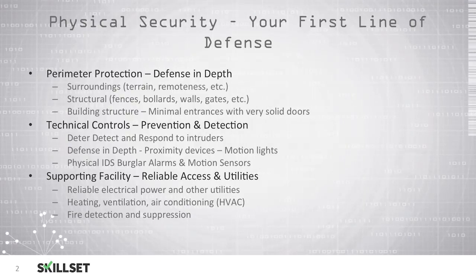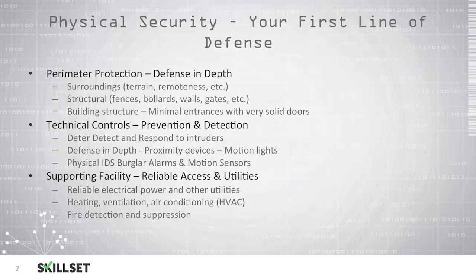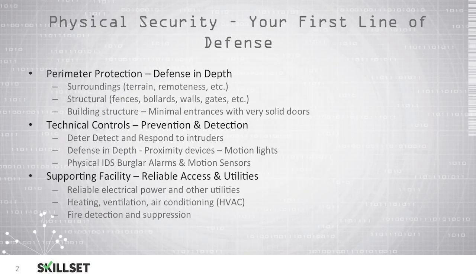We should also consider technical controls to prevent and detect intruders from entering our facility. The goal is to deter intruders, detect them, and then respond to them. With defense in depth, we can use proximity devices outside our building like motion lights so that if someone is walking on the property, a light would activate and perhaps notify our security staff. We can also use physical intrusion detection systems or burglar alarms with motion sensors and door sensors to detect any unauthorized entry into our facility.